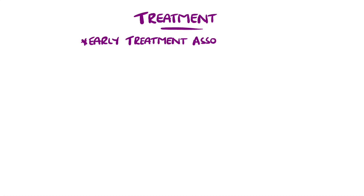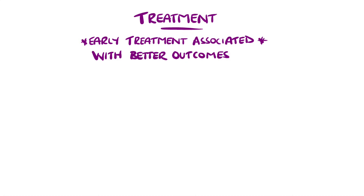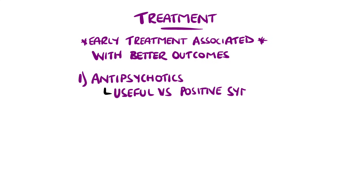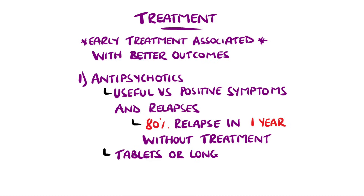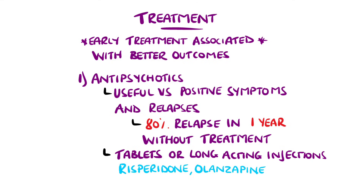Early treatment following onset of psychosis is associated with better outcomes. Antipsychotic medications are a main feature, as they are effective in the acute setting and useful in preventing relapses — it is estimated that 80% of untreated patients will relapse within one year. Maintenance can be through long-acting injections or tablets; examples include risperidone and olanzapine. If the initial agent is not effective, then another is used and the response assessed.